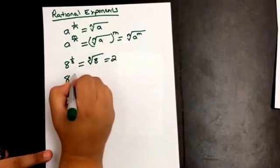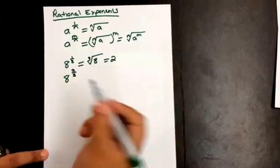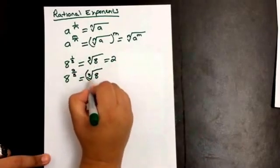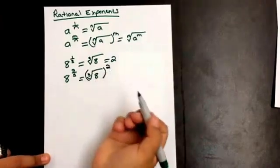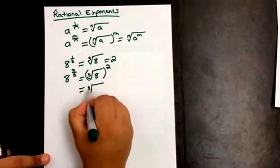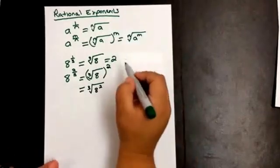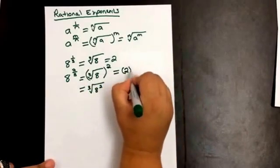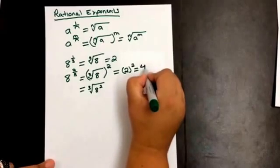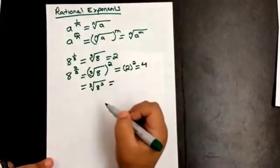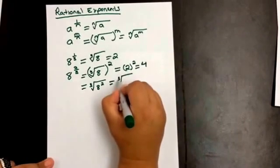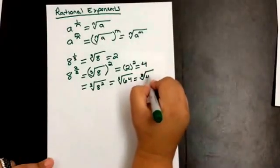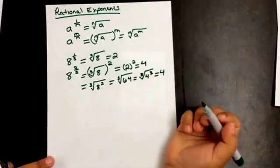What if we have 8 to the 2/3? Here n is 3 and m is 2. We can write it as the cube root of 8 squared, or as the cube root of 64. The cube root of 8 is 2; squaring 2 gives 4. Alternatively, the cube root of 8 squared is the cube root of 64, which equals the cube root of 4 cubed, giving us 4. Both approaches give the same answer.